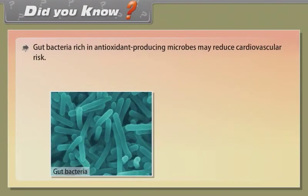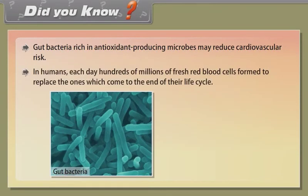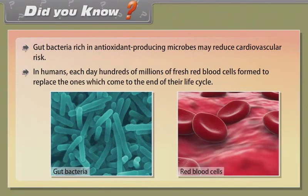Did you know? Gut bacteria rich in antioxidant-producing microbes may reduce cardiovascular risk. In humans, hundreds of millions of fresh red blood cells form each day to replace those that reach the end of their life cycle.